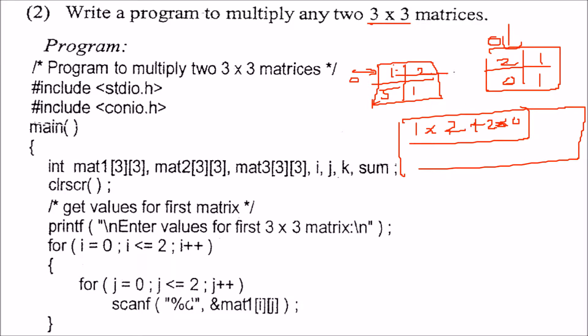Then, first row and first column is complete. Then we multiply this row with this column, that is 1 into 1 plus 2 into 1, and we have to place it here.